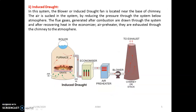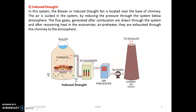In induced draft, the blower is placed just before the chimney. The furnace and grate produce combustible gases during combustion. The flue gases pass through accessories like superheater, economizer, and air pre-heater. At the end of the air pre-heater section, the pressure and velocity of the flue gases become poor. To increase their velocity, a blower is used here — its main function is to continuously blow air at high velocity so the flue gases are thrown out to the atmosphere through the chimney.